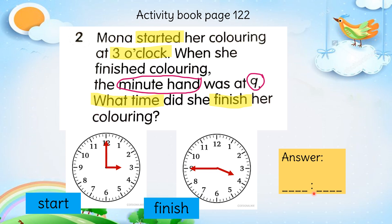So remember you have to put the colon in the middle — kamu kena letak titik bertindir di tengah-tengah. This is 3 for the hour. This is in between 3 and 4 — jarum ini di antara 3 dan 4, maksudnya dia belum lagi 4, so it is 3. And then the minute hand is showing 9 — 9 is how many minutes. You have to write that at the back — tulis di belakang sini berapa minute.